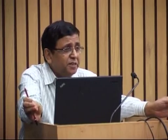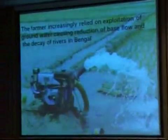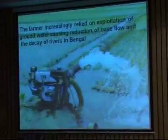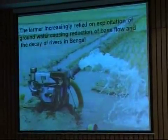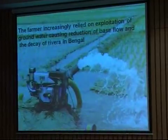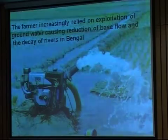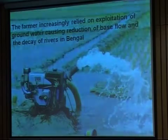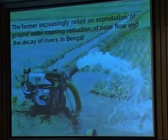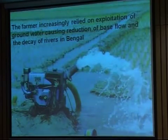More than six lakh shallow water tube wells are operating there. The result is depletion of the groundwater, and officially 81 blocks out of 342 blocks in West Bengal have groundwater contaminated with arsenic, and 49 blocks have been declared contaminated with fluoride. Friends working in agricultural science say that contamination has entered the food chain. This is a serious threat for the people of West Bengal living there.